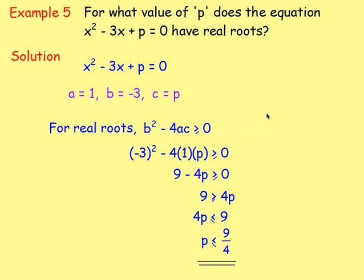The discriminant is also worded differently. For example: for what value of p does the equation have equal roots? Write down a, b, and c — here c is just p, not a number. For real roots, the discriminant is greater than or equal to zero. So set -3² minus 4 times 1 times p ≥ 0, solve for p, and you get p ≤ 9/4.